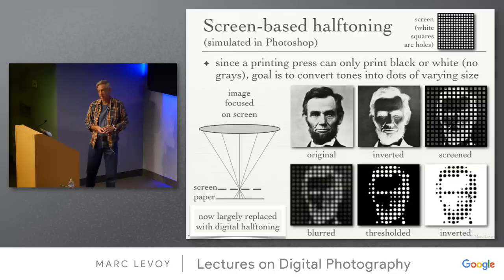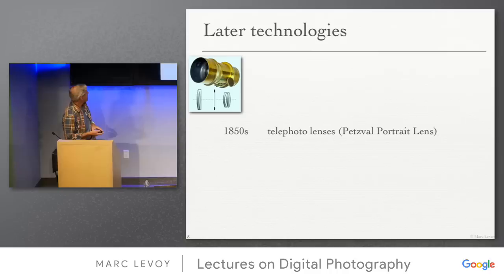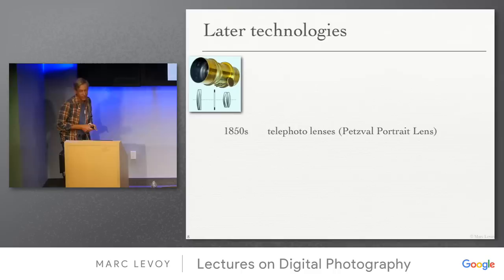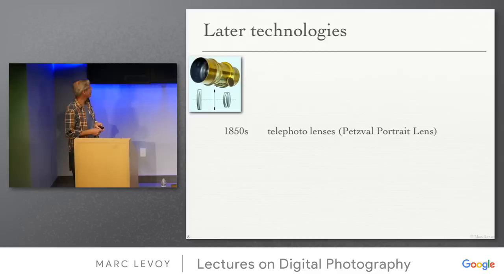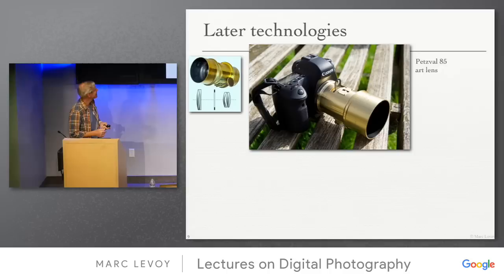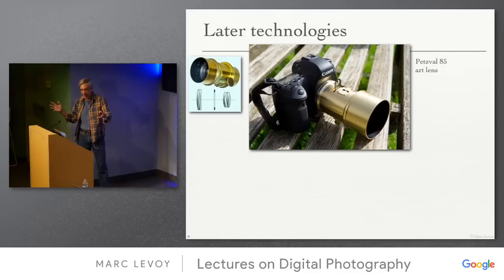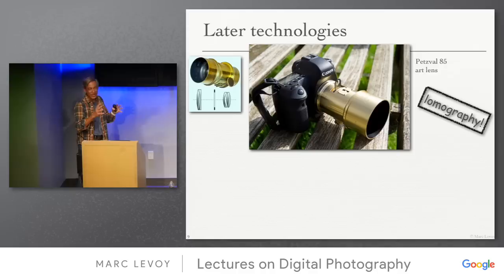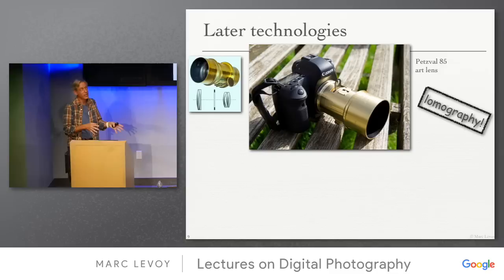A few more technologies: the Petzval lens from the 1850s gave f/3.7, which was several f-stops better than what was common before. You can still buy this Petzval lens and put it on a modern Canon camera, as part of a movement called Lomography — look it up. It came from a Viennese art school movement in the 1990s and basically means experimental art photography, typically with analog cameras and cheap cameras used creatively with all their aberrations.